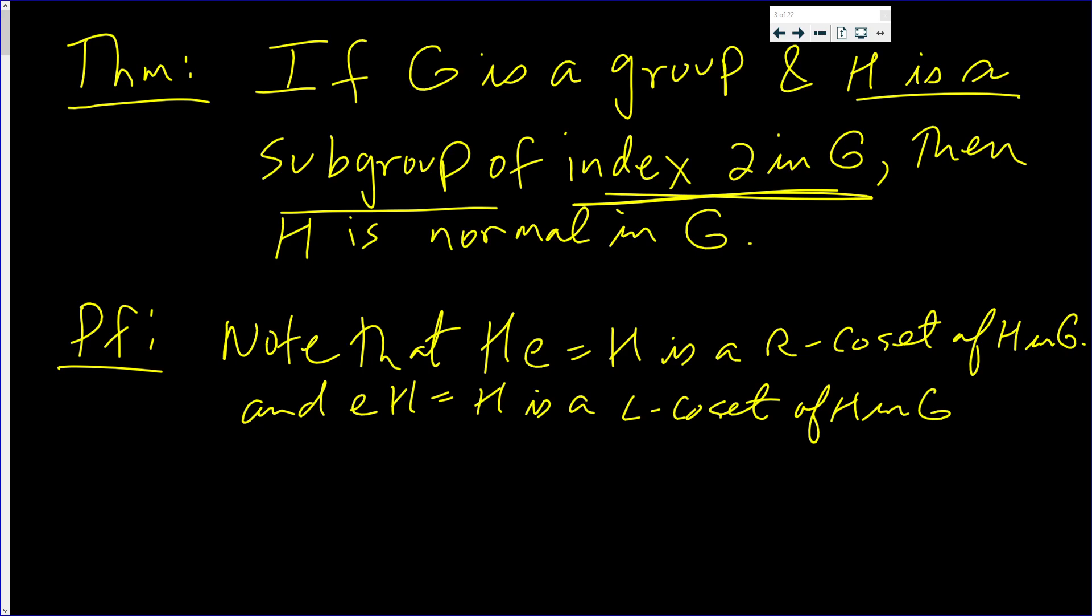Right off the bat, and this is always true for any subgroup, HE and EH are always the same cosets, left and right. They're equal.